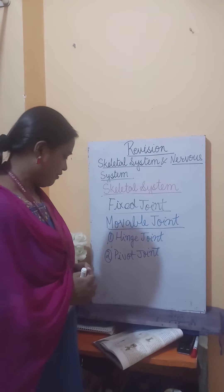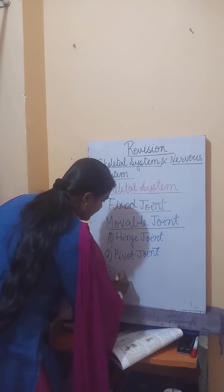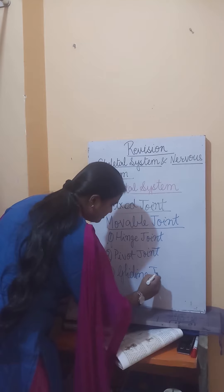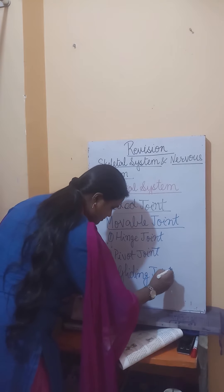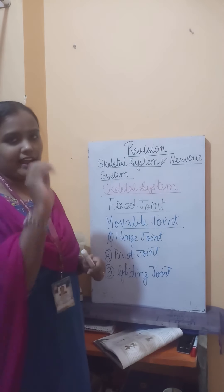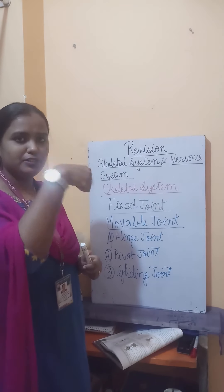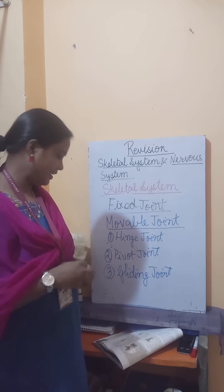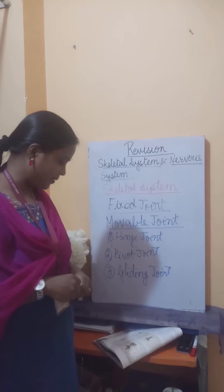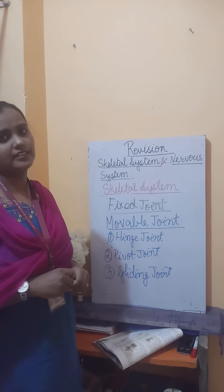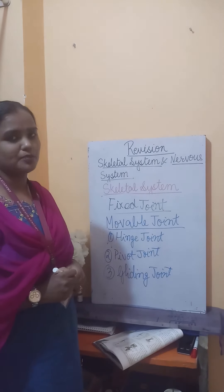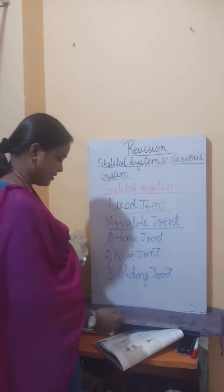The third type is the gliding joint. These joints are present between the bones in the wrist and ankle, which is why we are able to glide our wrist and ankle. They make it possible for us to bend, twist, and turn. Such joints are also present between the ribs and the breastbone.